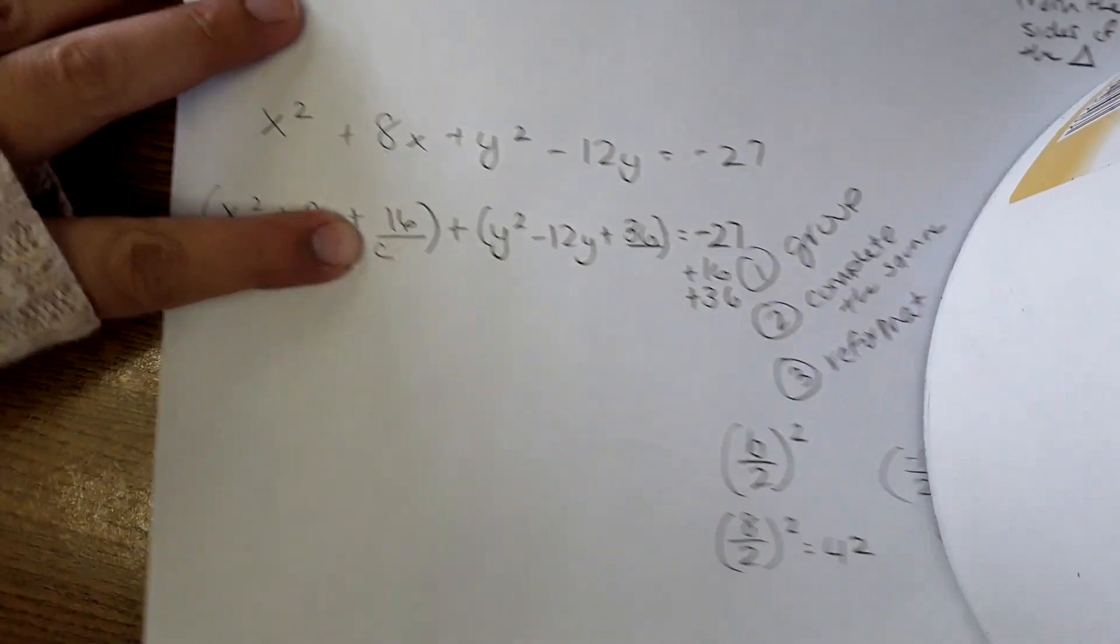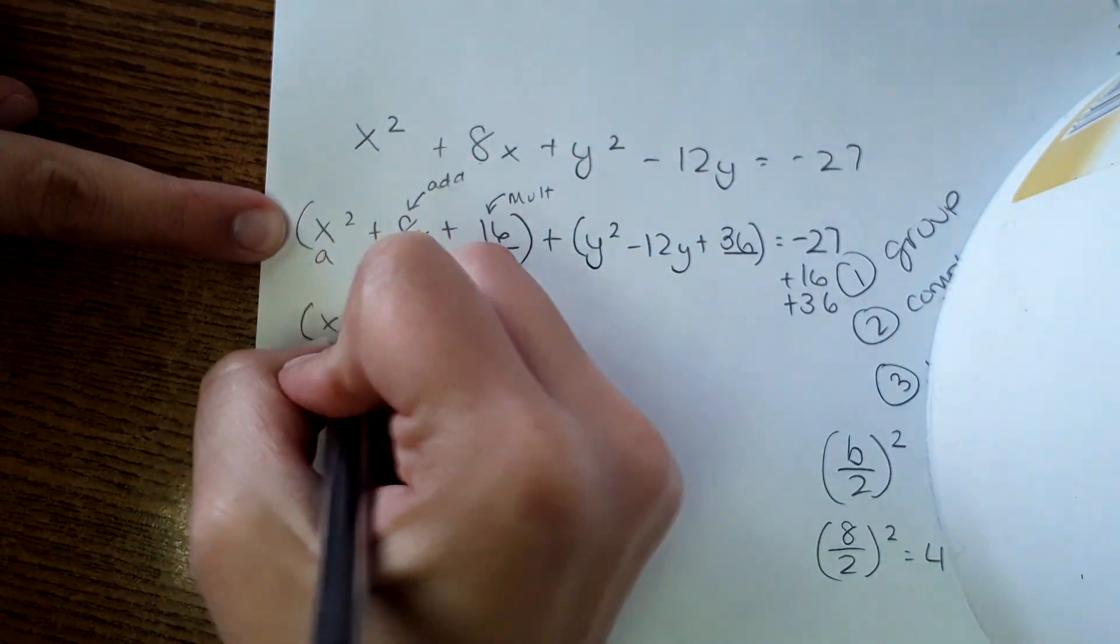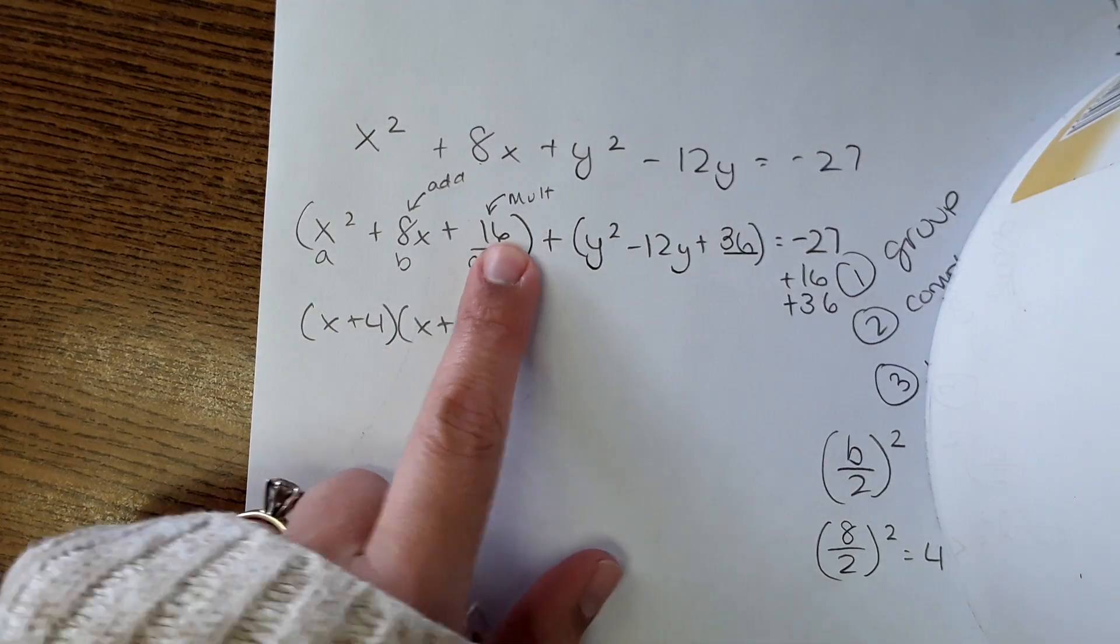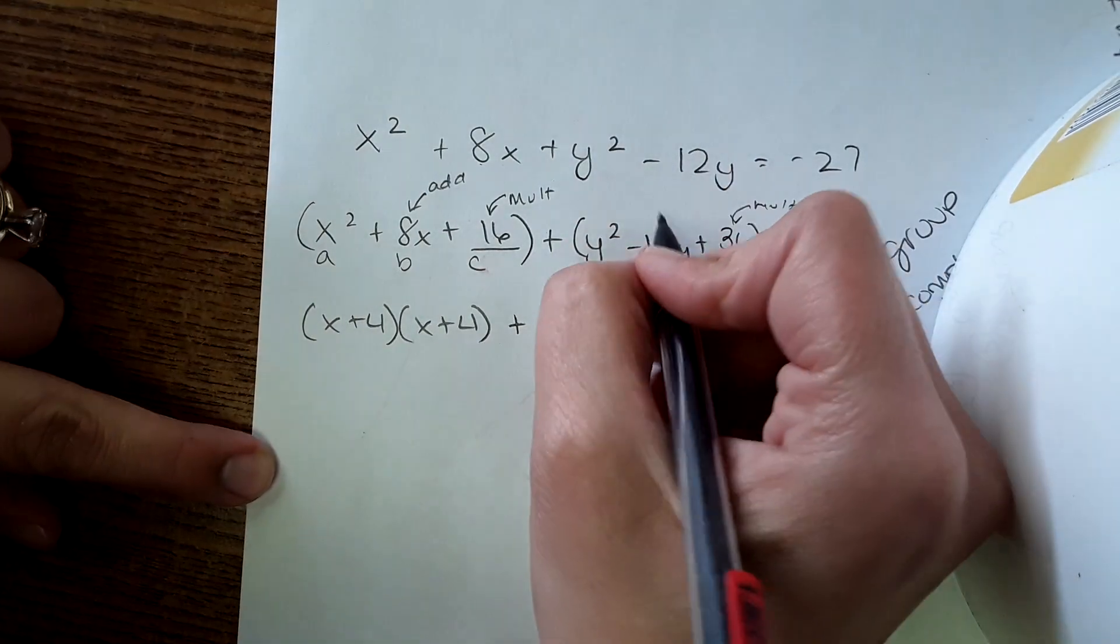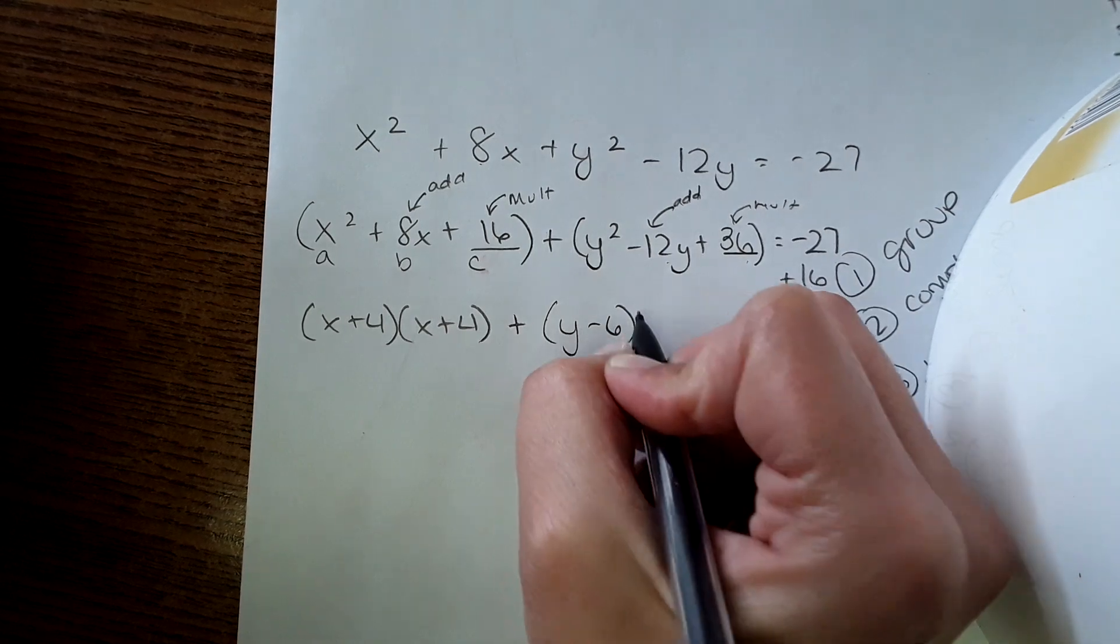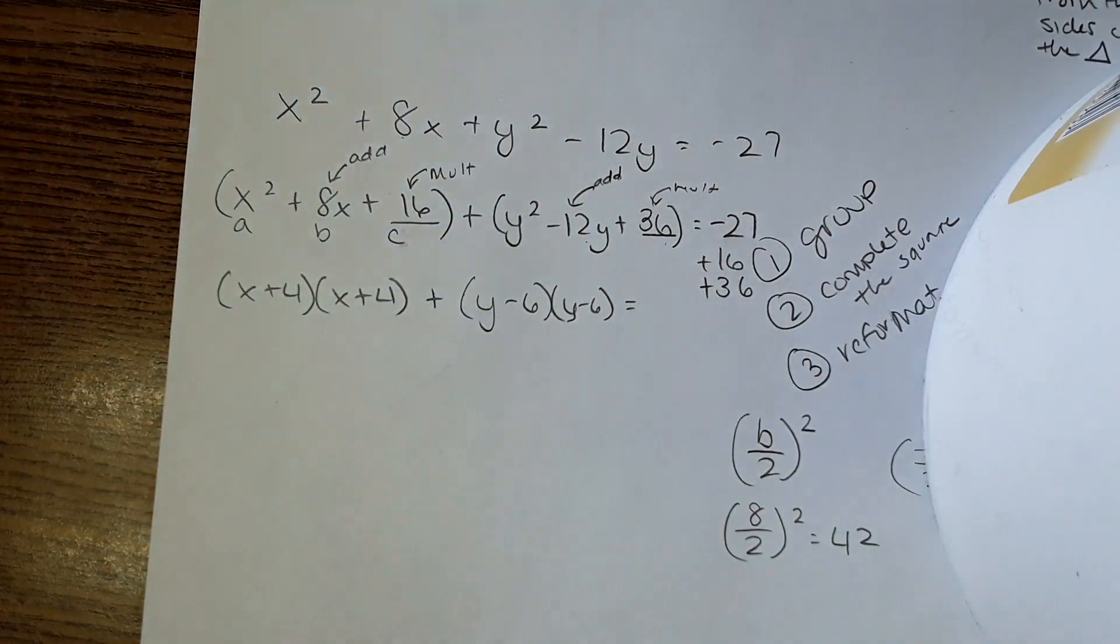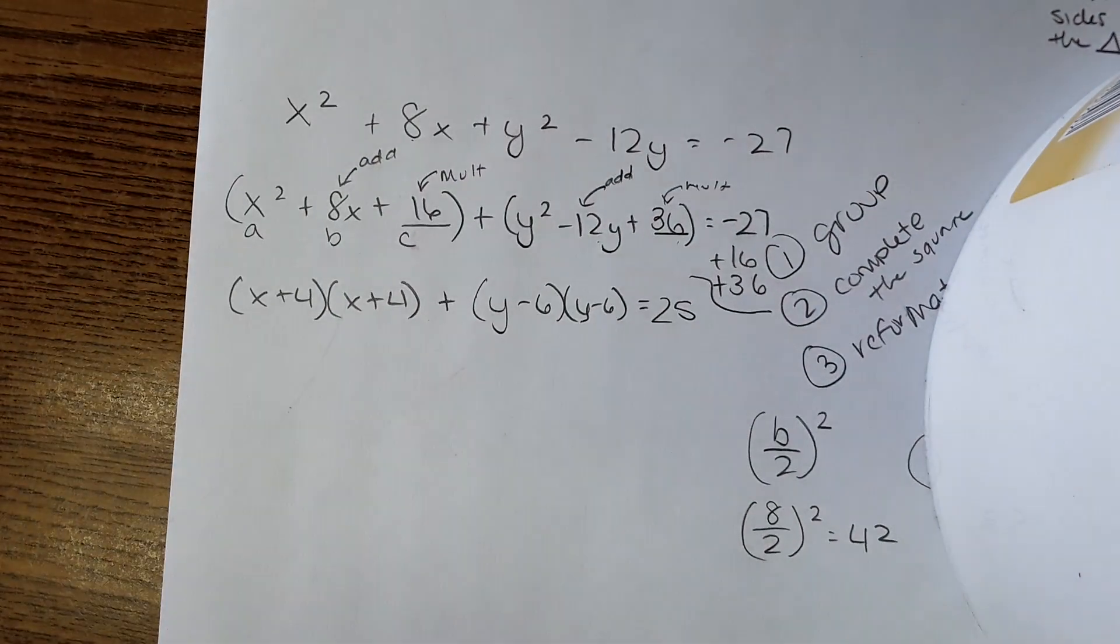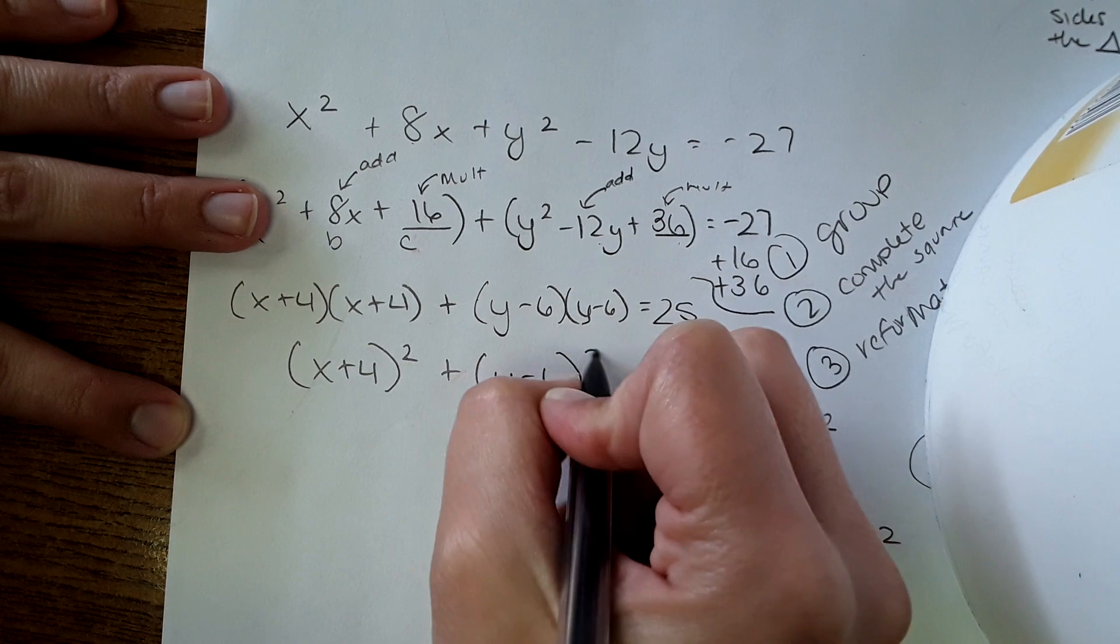Next step is we break these into factors. So two numbers that multiply to this number and add to this would be X plus 4, X plus 4. So 4 times 4 is 16. 4 plus 4 is 8. And then over here, two numbers that multiply to 36 and add to negative 12 would be negative 6 and negative 6. So Y minus 6, Y minus 6 equals negative 27 plus 16 plus 36 comes out to 25. And now you start to see the format that we're supposed to have. So this would be X plus 4 squared plus Y minus 6 squared equals 25.